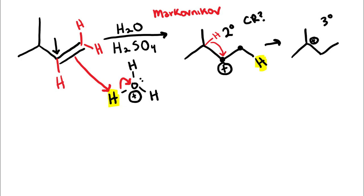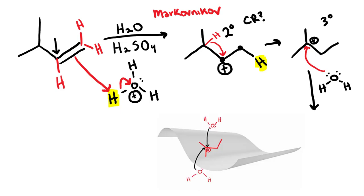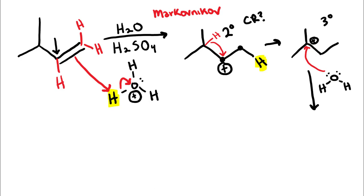Remember that a carbocation is flat, like a piece of paper. When we do the next step — nucleophilic attack — we're going to bring in our water molecule as the nucleophile. When the water attacks the carbocation, remember it is flat with trigonal planar geometry. So 50% of the time the water molecule is going to attack from the top face, and 50% of the time from the bottom face, because there's really no preference for one face over the other. When we draw our product, we're going to have 50% of the product on a wedge and 50% on a dash.